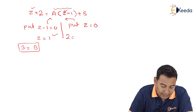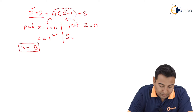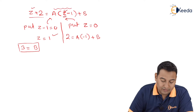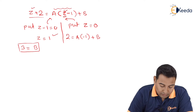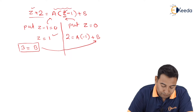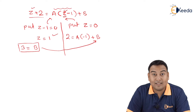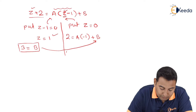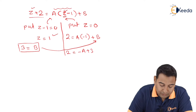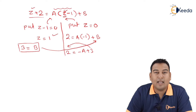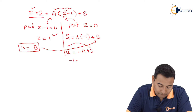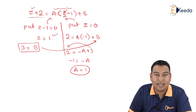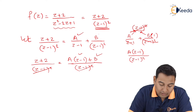Putting z = 1: 1 + 2 = 3 = B, since A·(1-1) = 0. So B = 3. Putting z = 0: LHS = 2, RHS = A·(-1) + B = -A + 3. Therefore -A + 3 = 2, giving -A = -1, so A = 1. We have B = 3 and A = 1.